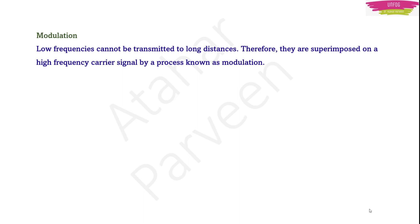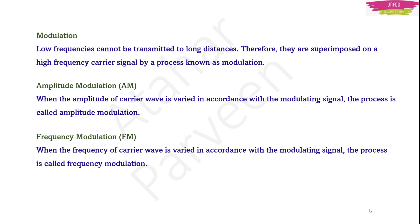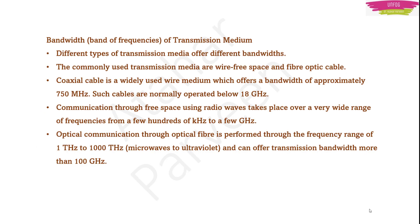Modulation can be done in two ways. One is amplitude modulation (AM) — if the amplitude of the carrier wave is varied in accordance with the modulating signal, the process is called amplitude modulation. The other is frequency modulation (FM) — when the frequency of the carrier wave is varied in accordance with the modulating signal, the process is called frequency modulation. The band of frequencies together is known as bandwidth.